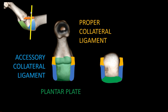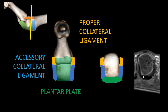If you do a cross section at this level it looks like this. We have the plantar plate here, the accessory collateral ligament here in blue, and then the proper collateral ligament. So you can appreciate the plantar plate and these collateral ligaments — the accessory one and the proper one.